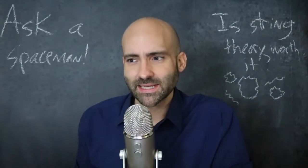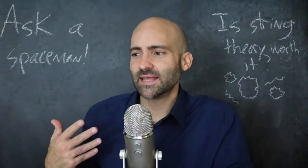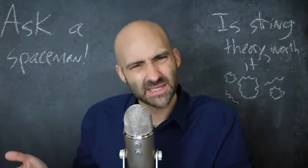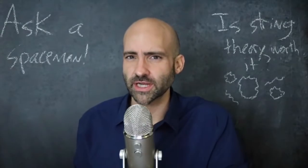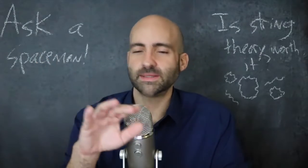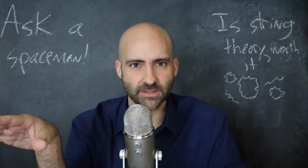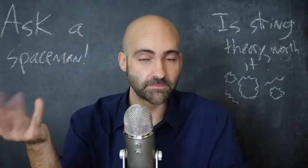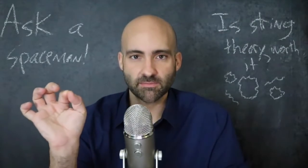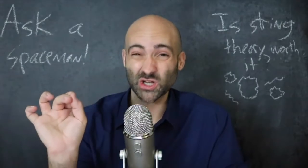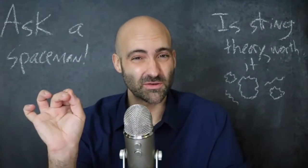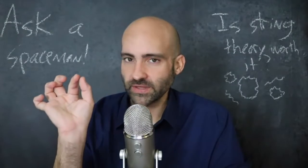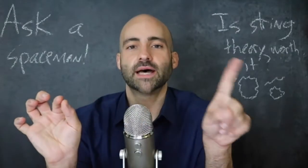Now you might expect that the partner particles, which are called super partners — because supersymmetry, it's going to get a little rough here with the jargon — the simplest form of supersymmetry possible says that for every fermion, say you pick a fermion like the electron, it has a super partner particle which is called a sparticle. That sparticle has the exact same mass as the electron, the exact same charge, but a different spin.